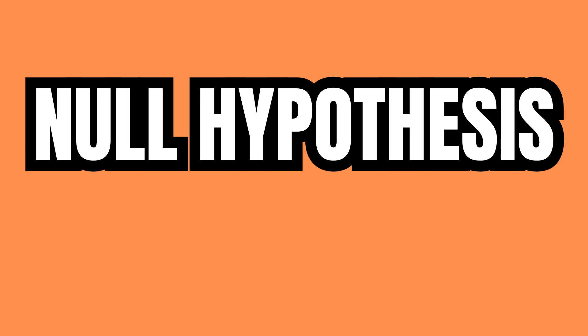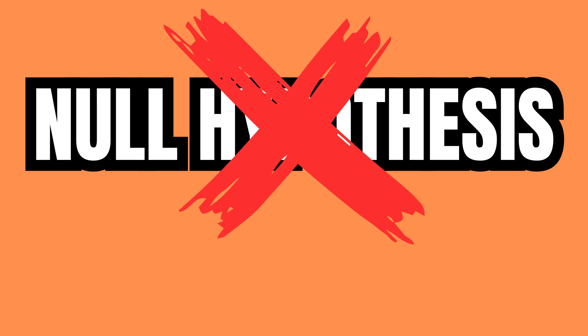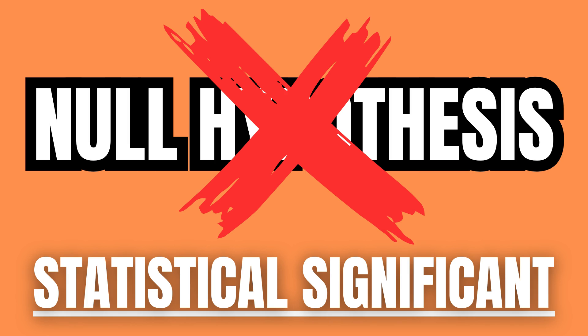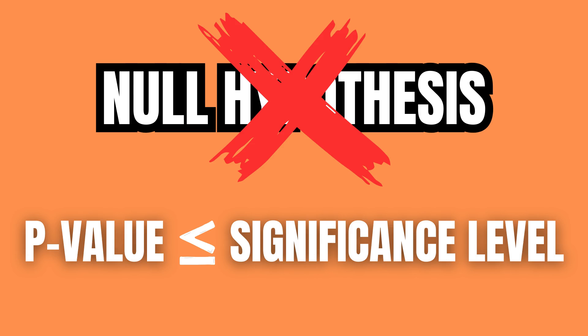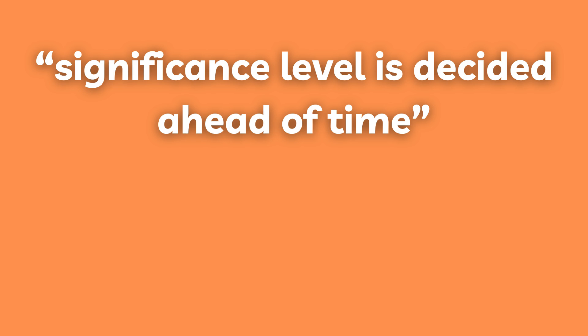A result is said to be statistically significant — in other words, not due to chance — if the null hypothesis can be rejected. The null hypothesis can only be rejected if the p-value is less than or equal to the significance level. Therefore, the significance level has to be decided before the data is collected.